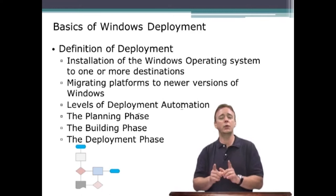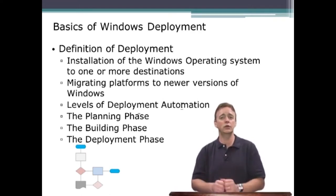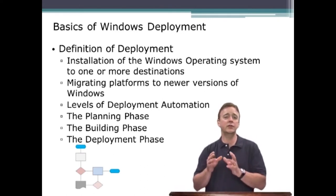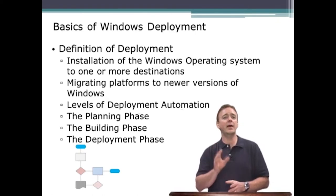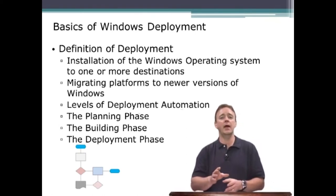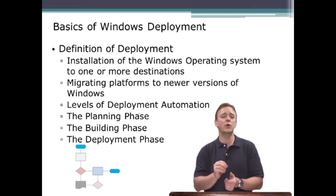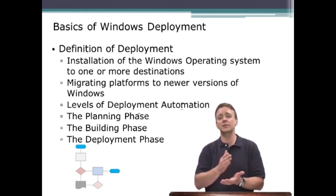The difference between light touch and zero touch comes down to how much user interaction is needed with each target you're deploying Windows onto. Another important area to look at briefly are the phases we go through to reach the point of choosing a deployment option: the planning phase, the building phase, and the deployment phase.